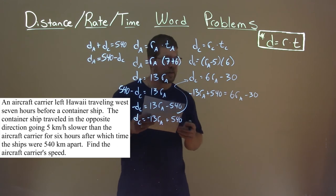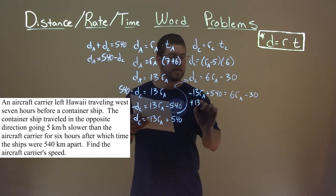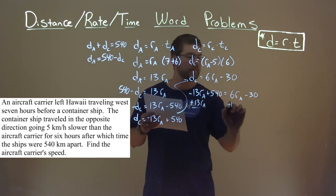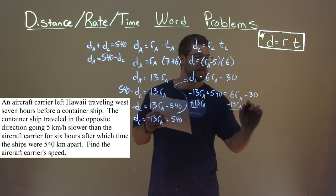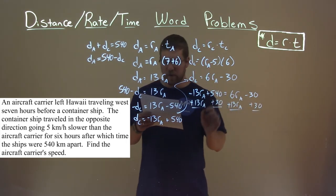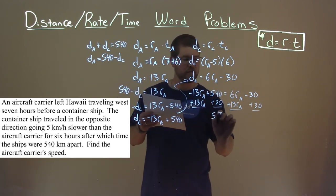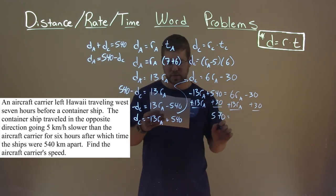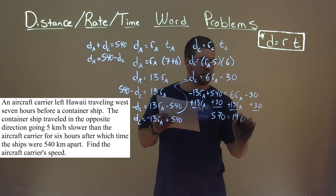So let's try to get that by itself. If we add 13 R sub A to both sides, and we can add 30, let's put our like terms together. 540 plus 30 is 570, and 6 plus 13 is 19, so we have 19 R sub A.